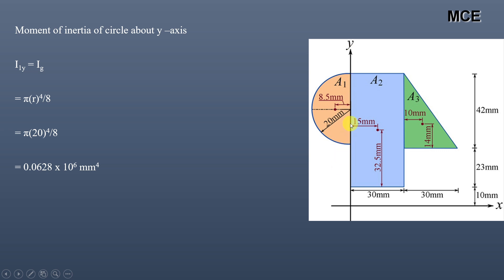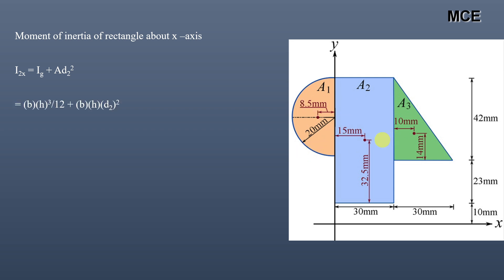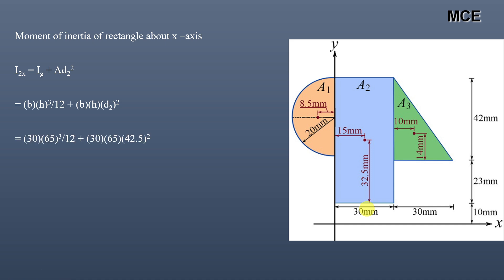The moment of inertia of the rectangle about the x-axis equals bh³/12 + A·d₂², where b = 30 mm (parallel to the x-axis) and h = 42 + 23 = 65 mm (perpendicular to the x-axis). The distance d₂ between the centroid of the rectangle and the x-axis is 32.5 + 10 = 42.5 mm. Substituting b = 30, h = 65, and d₂ = 42.5 mm gives the moment of inertia of the rectangle about the x-axis as 4.209 × 10⁶ mm⁴.